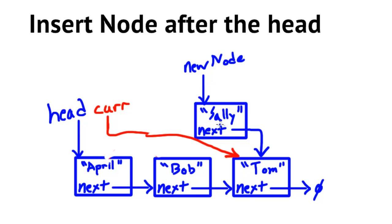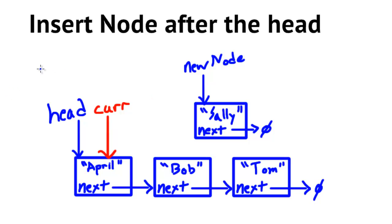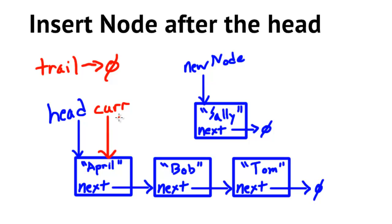We're going to introduce a trailing pointer — also called a previous pointer — which will simply point to the previous or trailing node, the node that current was previously pointing at. Let me back up and change our picture to the very beginning. We'll create a new pointer called trail, initialized to null so it's not pointing to anything initially.